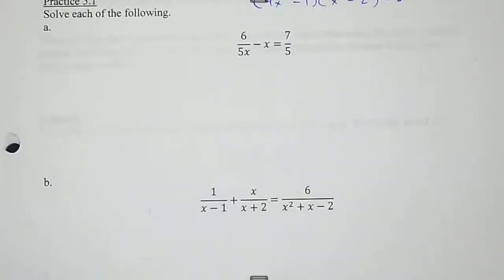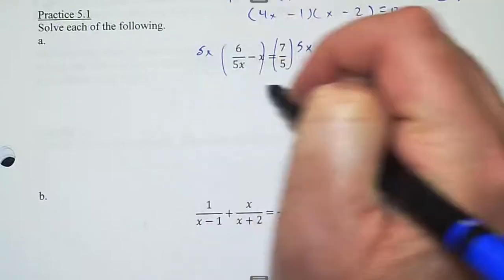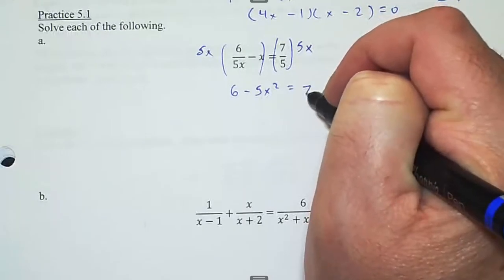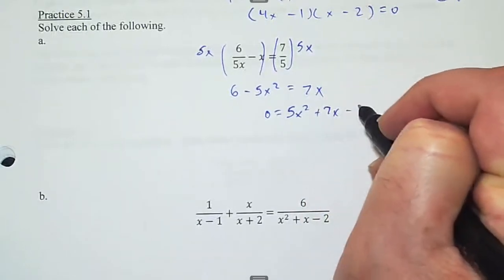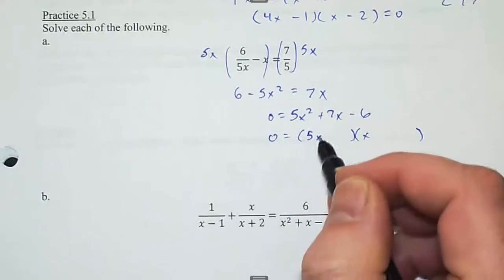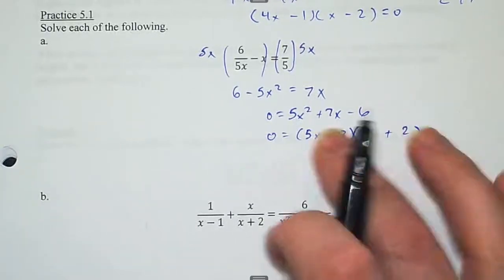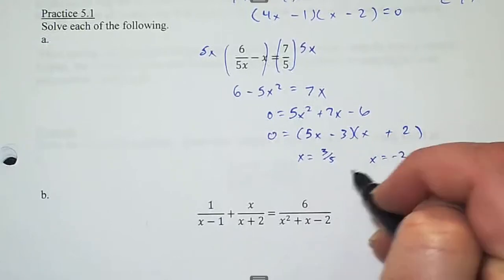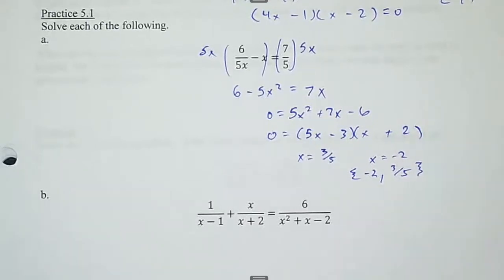On practice 5.1 A, we multiply both sides by 5x because that's the least common multiple of 5x and 5. That gives me 6 − 5x² = 7x. Because I have an x squared I need to set it equal to zero and factor. If I do (5x − 2)(x + 3), I get +10x on the outside product and −3x on the inside: that's 7x. So x = 3/5 and x = −2, neither of which give me a zero in the denominator.